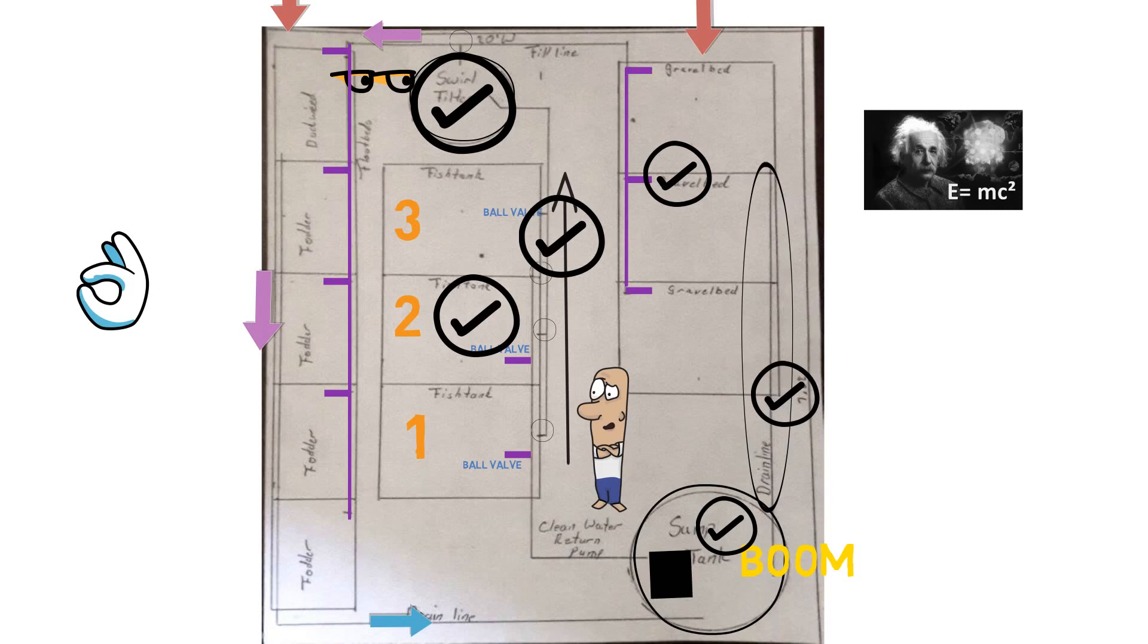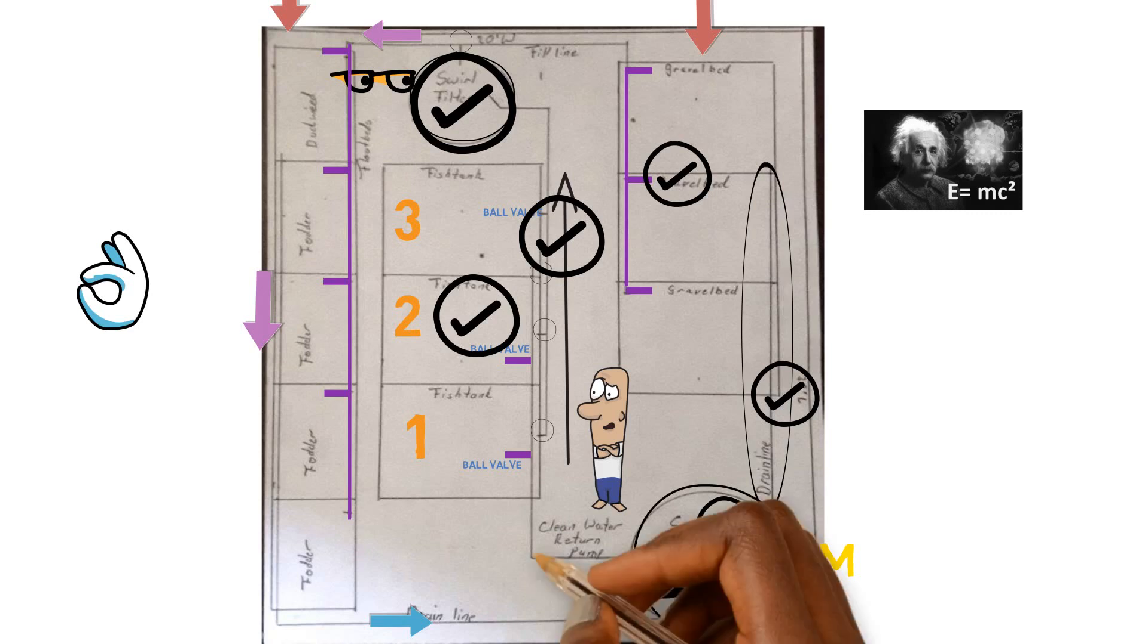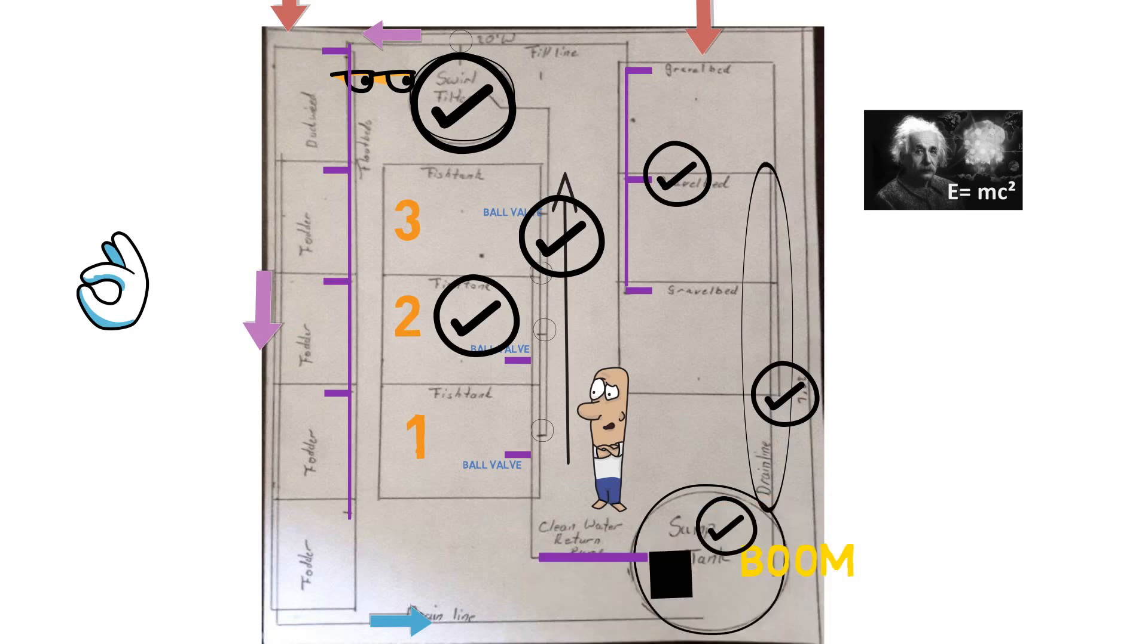But the way I would design this, if I was putting this particular system together, I would have the sump tank with the pump and I would have each one of these sections off. I'd have the line connect to the fish tank coming from the pump. Boom. That would be on its separate line.